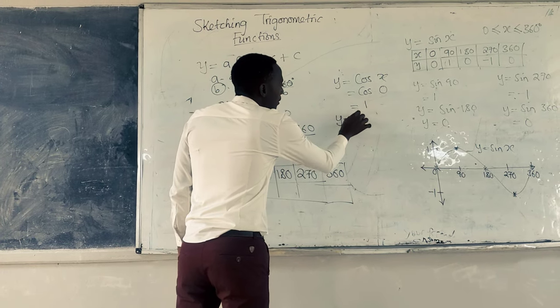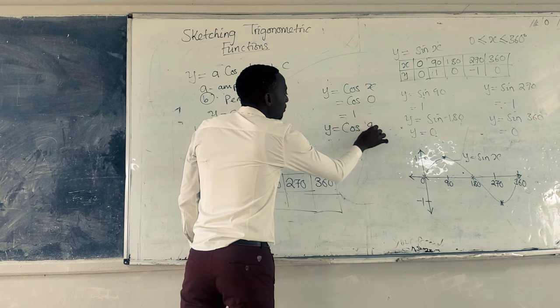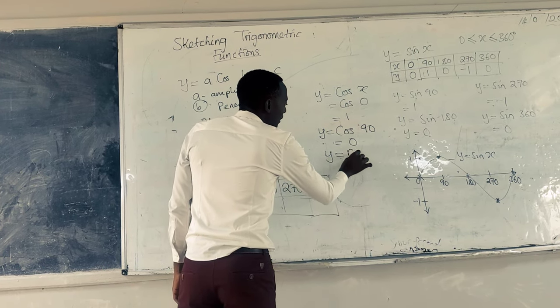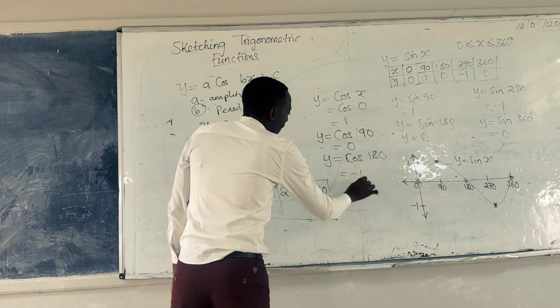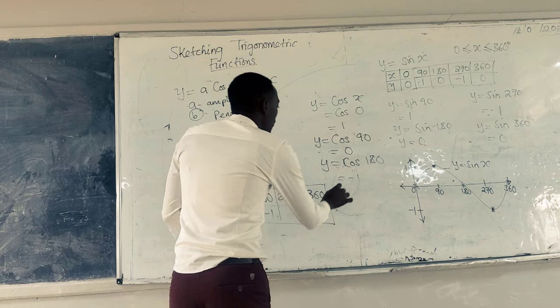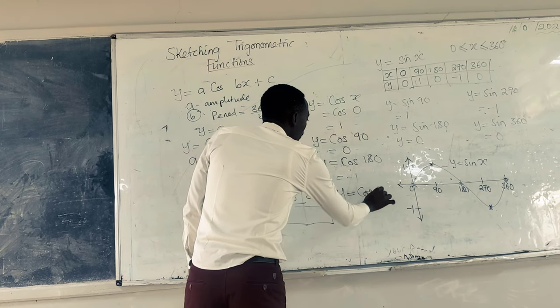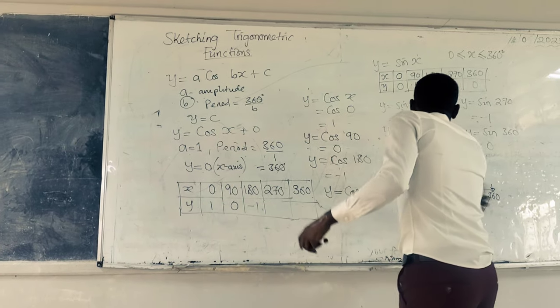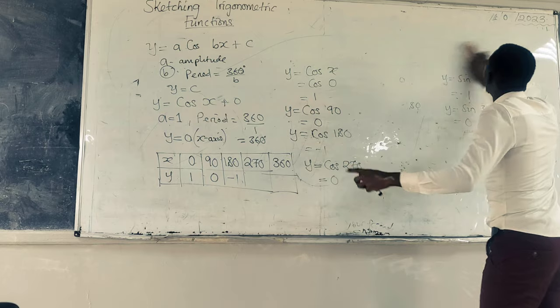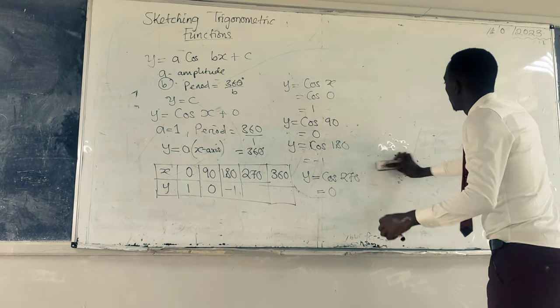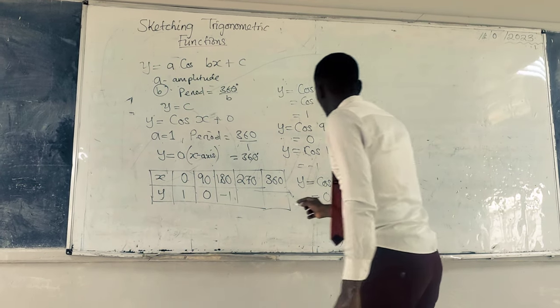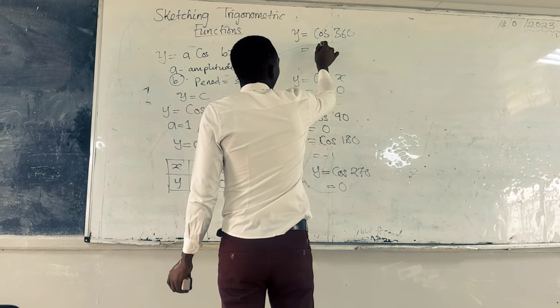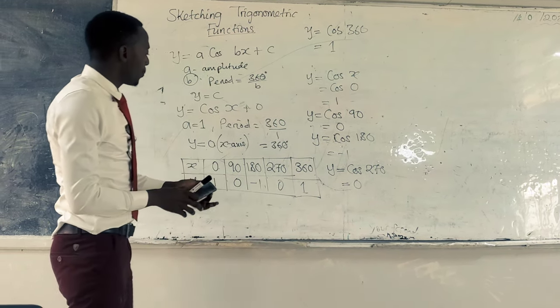And then we go to cos 90. Cos 90 is 0. Cos 180 is going to give us negative 1. Cos 270 is going to give us 0. And cos 360 is 1. So this is how we come up with the table of values.